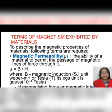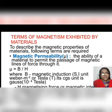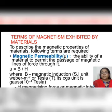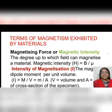Mu is different for different substances. It means that if a substance has high mu, it can be magnetized very easily.